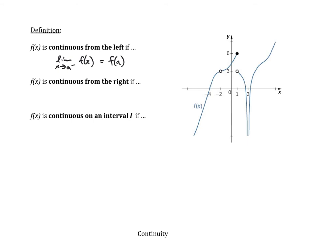Continuous from the right means the limit as x approaches A from the positive side of f of x must equal f of A. Looking at x equal to one again: when I come from the right, where does it look like the function is going? It looks like it's going to three. But the function is actually equal to six. So at x equal to one, this is not continuous from the right.